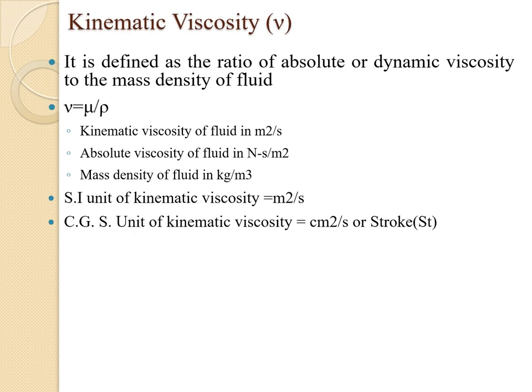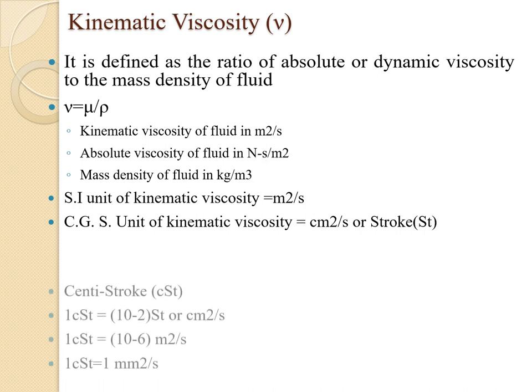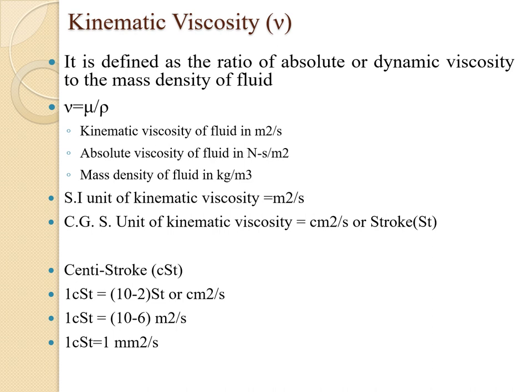Kinematic viscosity is defined as the ratio of absolute or dynamic viscosity to the mass density of the fluid: kinematic viscosity = mu / rho. Kinematic viscosity is in m²/s, absolute viscosity is in N·s/m², and mass density is in kg/m³. The SI unit of kinematic viscosity is m²/s and the CGS unit is cm²/s or Stoke. One centistroke equals 10⁻² Stoke or cm²/s; one centistroke equals 10⁻⁶ m²/s; and one centistroke equals 1 mm²/s.